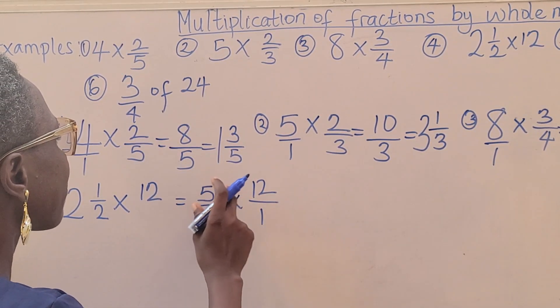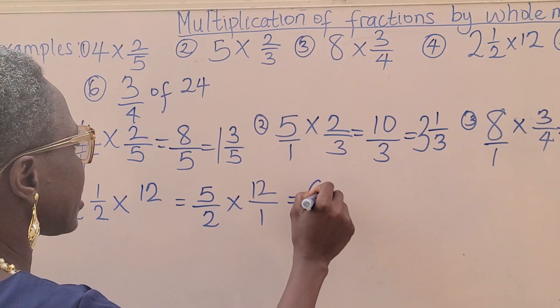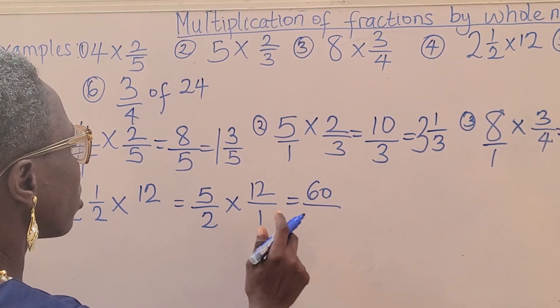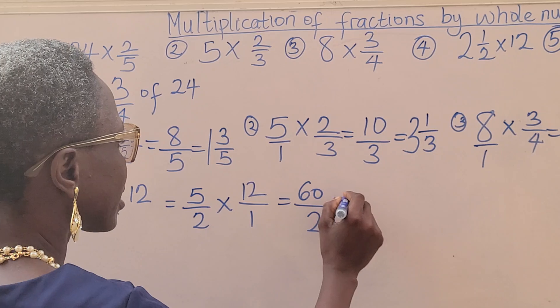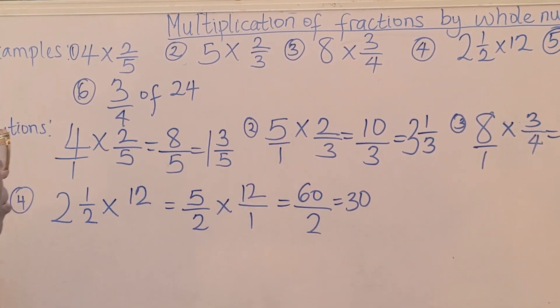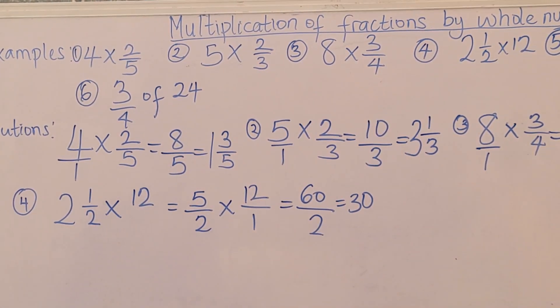Then you put it back over the denominator times 12 over 1. Now we can multiply. You can see that it's back here. 5 times 12, that is 60. 2 times 1, that is 2. 60 divided by 2, that is 30. That's question 4 solved.